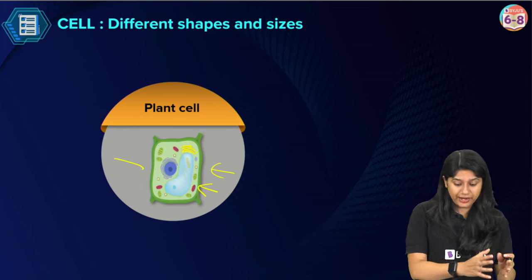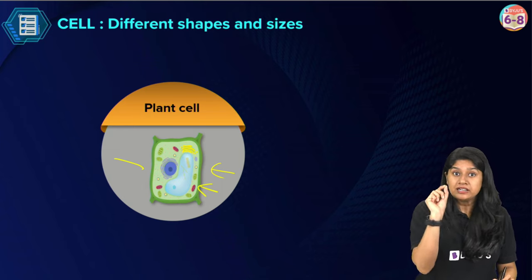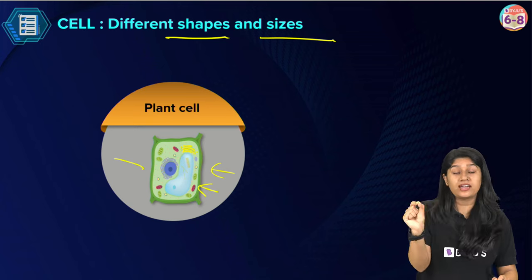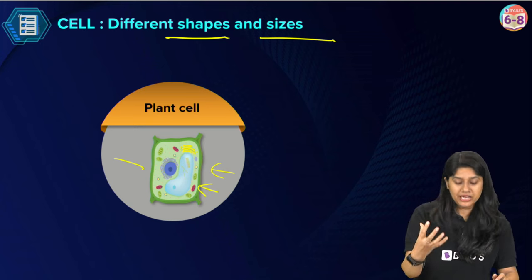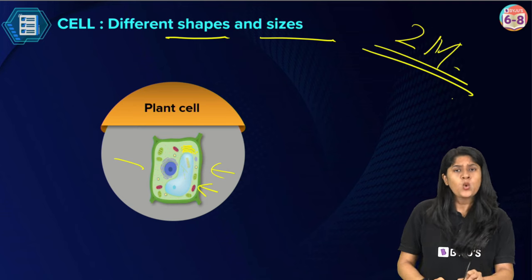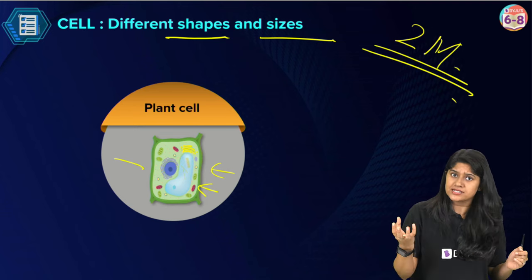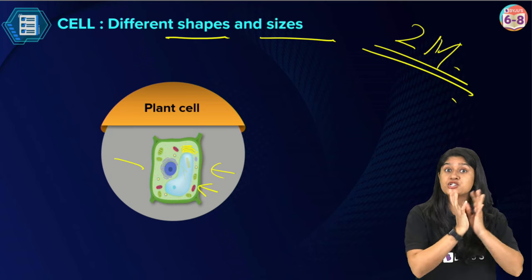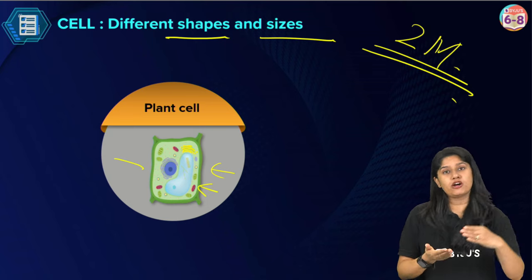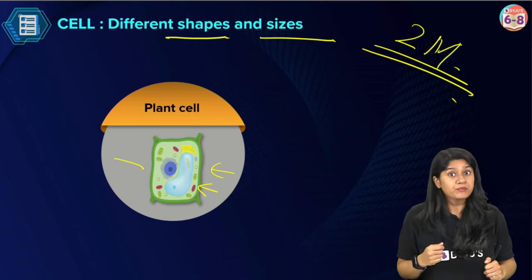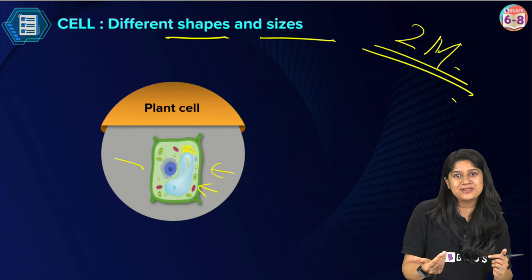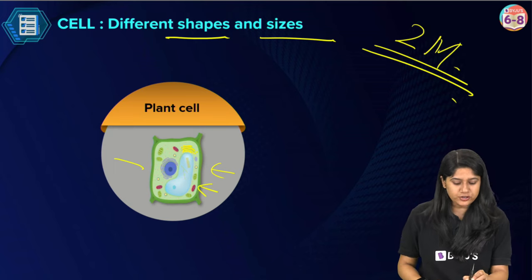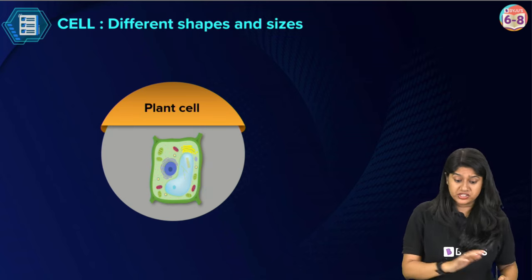We can conclude that cells have different shapes and sizes according to the function they have to perform. In the examination, a two-mark question can ask why cells have different shapes and sizes. You can take one or two examples — plant cells, animal cells, or RBCs — explain their shape and size, and write the specific function of that particular cell.